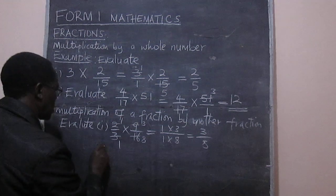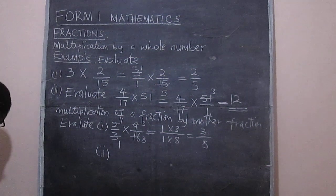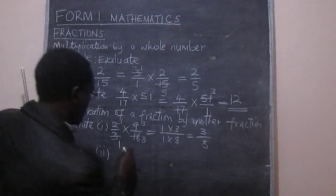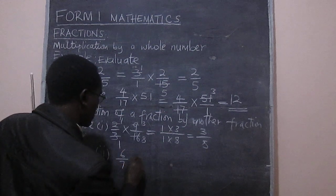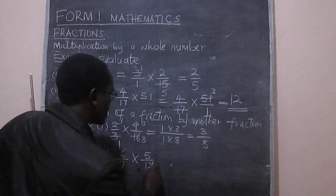So we have a number 2 there. And for this one, we take 6 over 7 multiplied by 5 over 12.